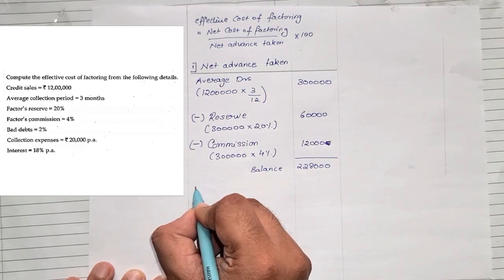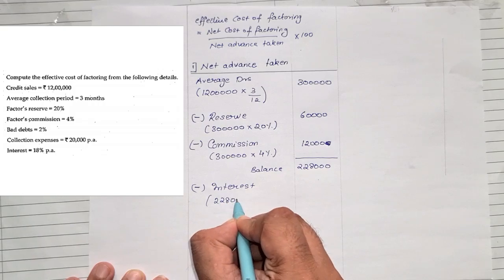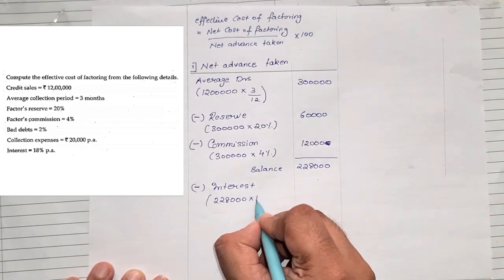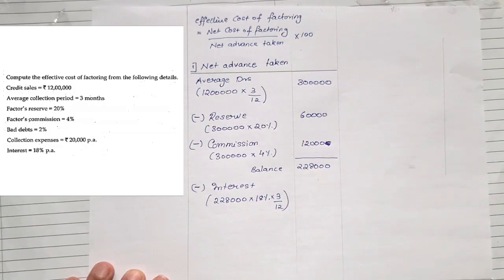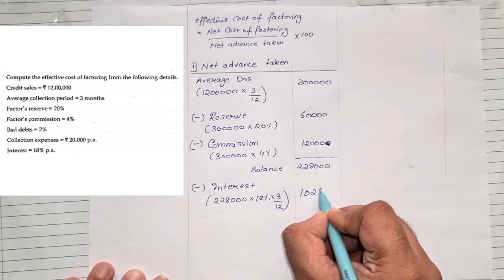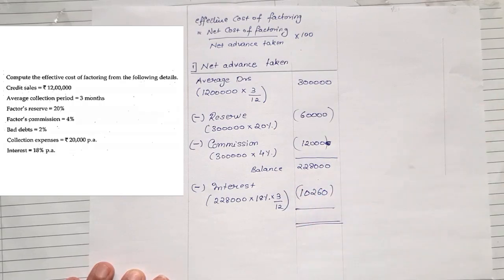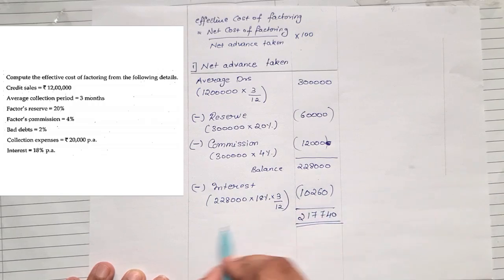On this balance, we need to calculate less interest. The rate of interest given in the question is 18% and the credit period is 3 months, so it will be 2 lakhs 28,000 into 18% into 3 divided by 12, which comes to 10,260. Subtracting: 2 lakhs 28,000 minus 10,260 gives us 2 lakhs 17,740. This is the net advance taken.